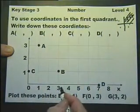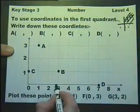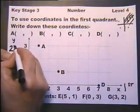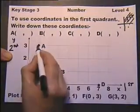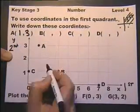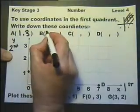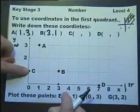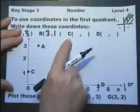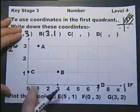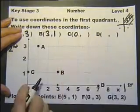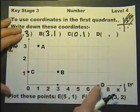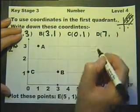The x value is first and the y value second. So A is one, three. B is three, one. So it's a case of remembering that it's the x value first and the y value second. So C is actually nought on the x-axis and one up the y-axis. D is seven, first number seven, and nought on the y-axis. So we need to be able to read coordinates and also plot them.